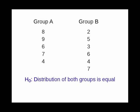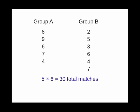Here's how the calculation works. Let's pretend that we have a competition where every person in group A competes against every person in group B. In this case, that would make a total of 30 matches.